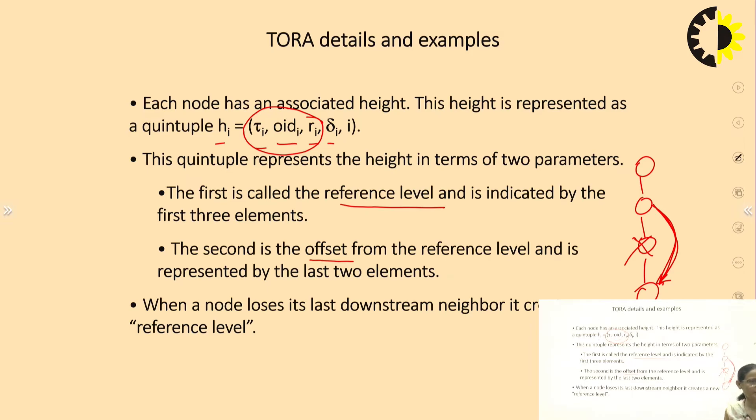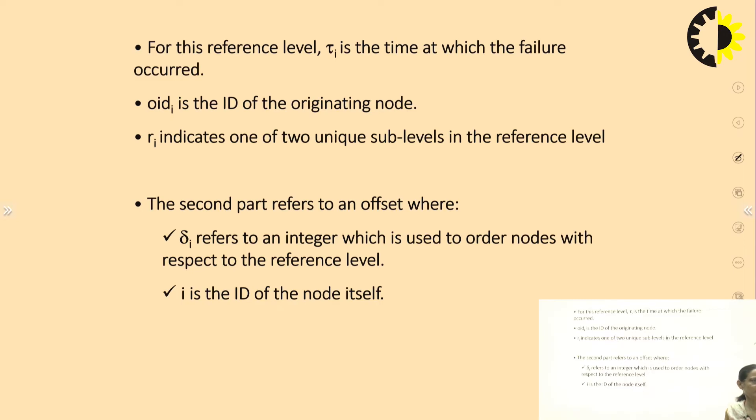When a node loses its last downstream neighbor, it creates a new reference level. For this reference level, τi is the time at which the failure occurred. Whenever a failure occurs, τi needs to be updated. oidi is the ID of the originating node. ri indicates one of the two unique sublevels in the reference level. The second part, the offset, here δi refers to an integer which is used to order the nodes with respect to the reference level. i is the ID of the node itself.